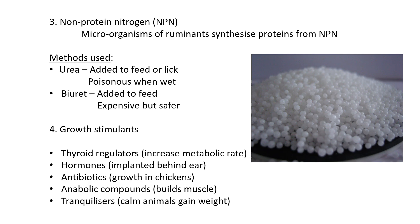Antibiotics, as the name implies, destroy bacteria, but they are also given to chickens to increase their growth rate. Anabolic compounds — where 'anabolic' refers to building — help the animal build muscle. All these growth stimulants help the animal grow quicker or build more muscle. Lastly, tranquilizers are used to calm animals, especially during transport. Animals in a feedlot are also given tranquilizers because calm animals gain weight quicker — they will stand and eat more. That's the end of this lesson.